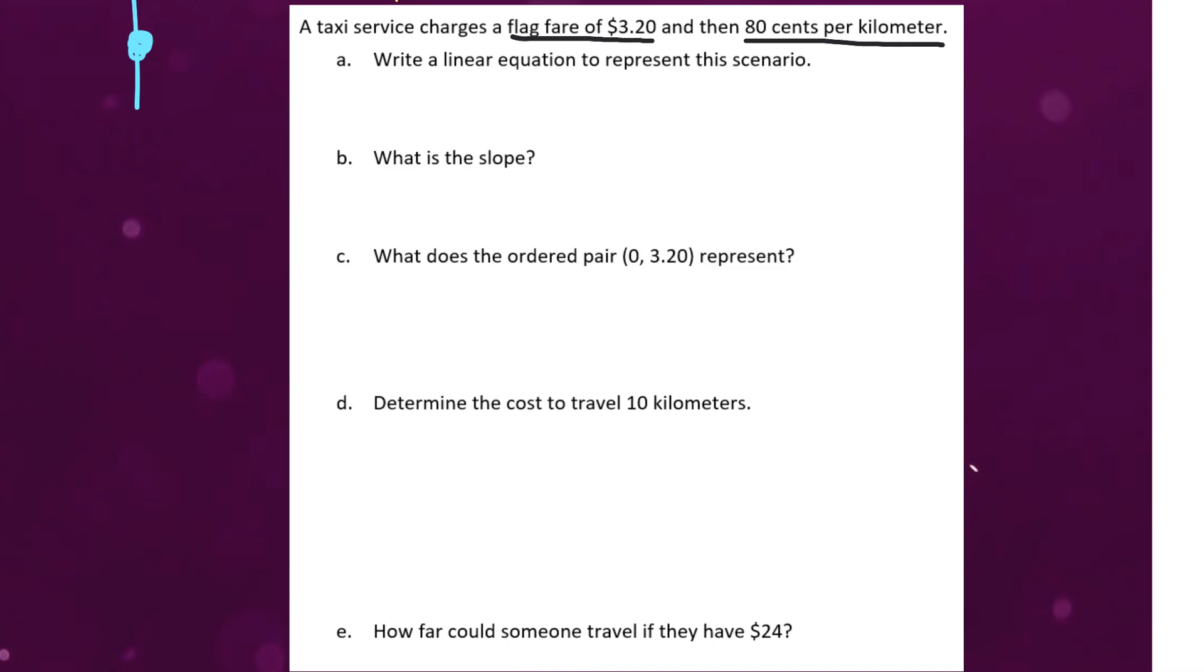Well, we're going to start off by writing y equals. That's how we always start. And I know x is going to represent my unknown value. So, in this case, our unknown value is how far the taxi is driving us. Specifically, the number of kilometers. And per means to multiply. So, the flag fare is going to be $3.20. And then we're going to add $0.80 per kilometer that we drive.